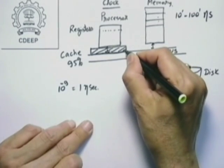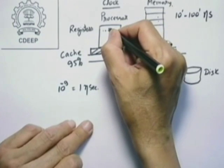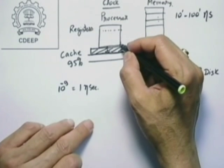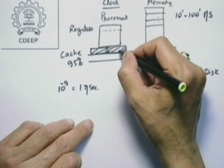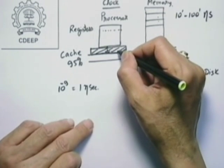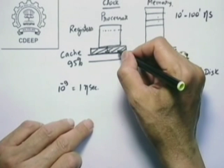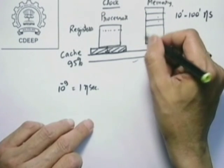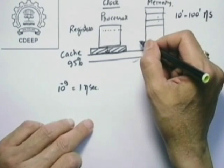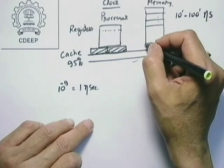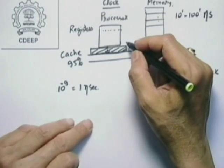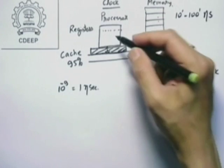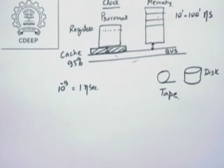In a nutshell, cache memory is almost as fast as the internal register memory of the processor, but much more costly, so you don't have very large amounts of it. It is not uncommon these days to have 64 megabytes or 128 megabytes of cache when the main memory is of the order of 2 or 4 gigabytes. People always try to maintain this kind of buffer. That is the purpose of the cache.